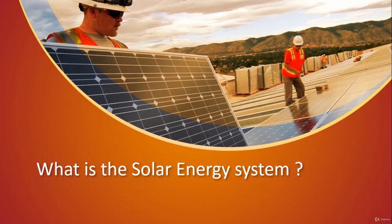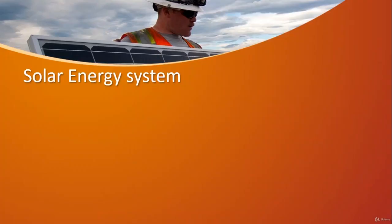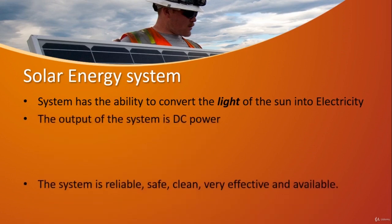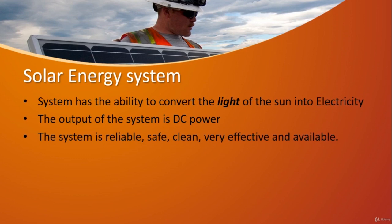Hello solar fans and welcome to the first video of the full solar system design course. In this video we will see what is the solar energy system and its main components. A solar energy system is the system that converts the light of the Sun into electricity — the light, not the heat — and the output of the system is DC power. The system is reliable, safe, clean, very effective, and available.